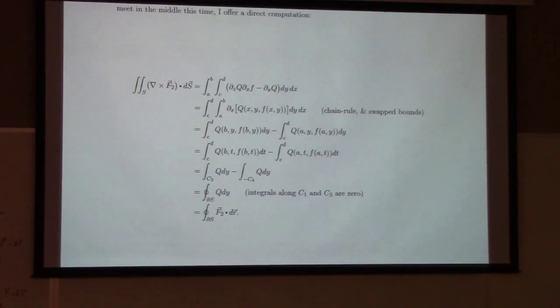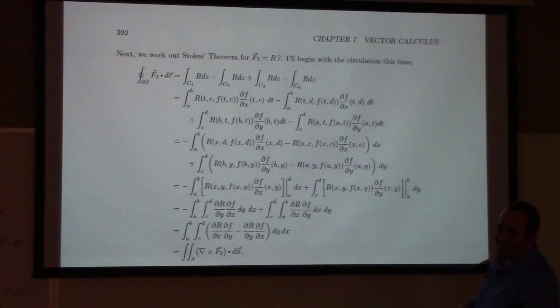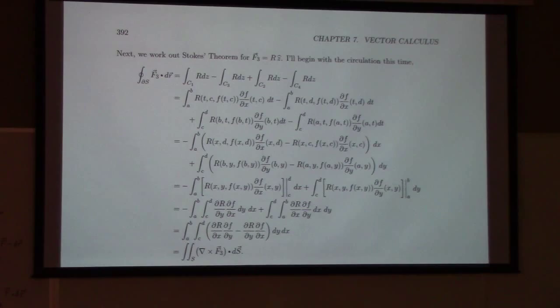The Z component is a little bit different because it's got non-trivial contributions from every one of the curves. So if I was to say the Q and the R are just the same as P, that would be disingenuous. In fact, the R component is much worse.